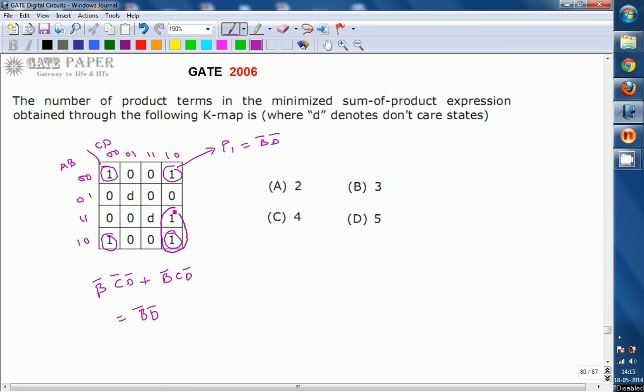This one can be combined by using this. So, this is second product term, P2. P2 is going to be equal to A, C, D-bar. This is what you will get, P2.